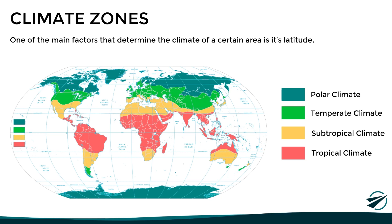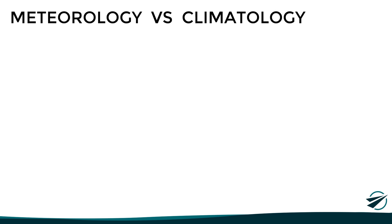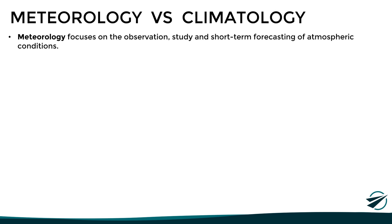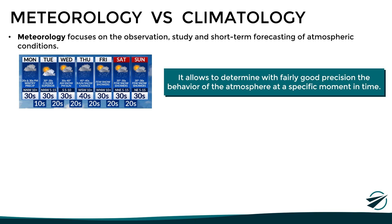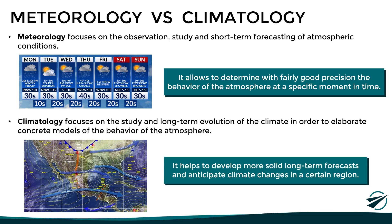Having understood the concepts of weather and climate, let's look at two terms that are commonly confused: meteorology and climatology. Meteorology focuses on the observation, study, and short-term forecasting of atmospheric conditions, allowing us to determine with fairly good precision the behavior of the atmosphere at a specific moment in the near future. Climatology, on the other hand, focuses on the study and long-term evolution of climate in order to elaborate concrete models of atmospheric behavior, helping to develop solid long-term forecasts and anticipate climate changes in a region.